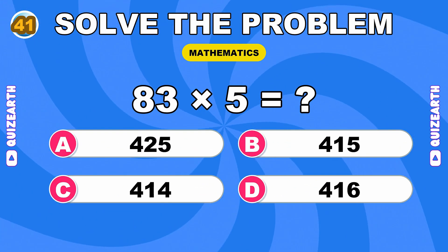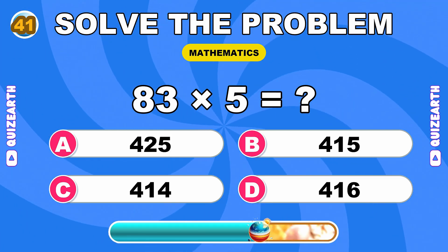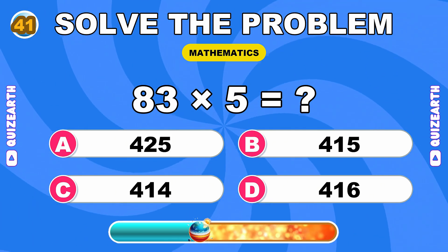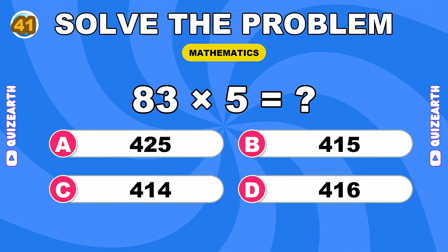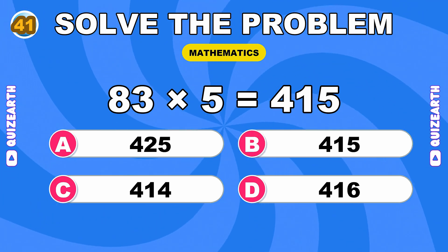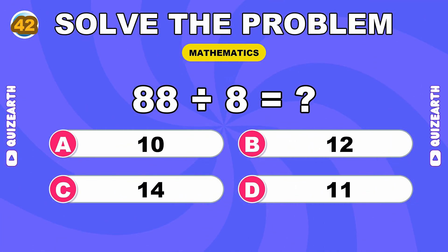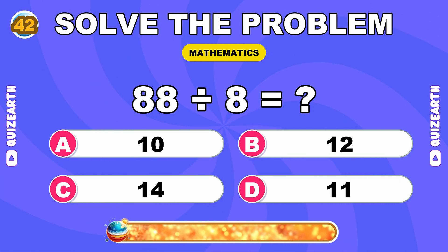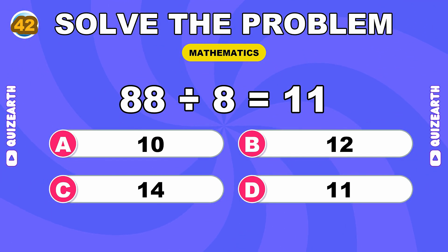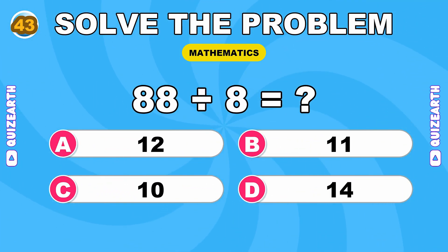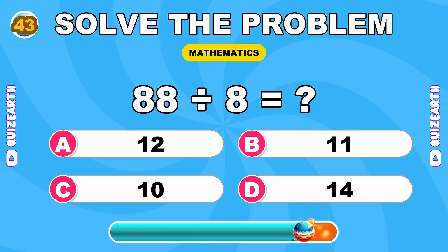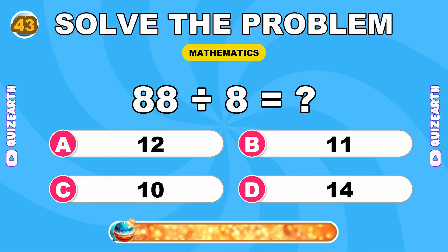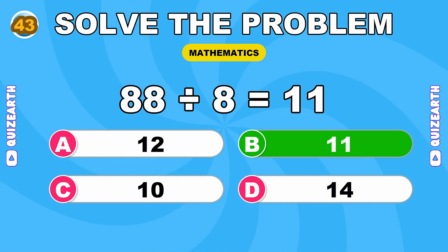How much is 83 times 5? Incredible, 415. What do you get when you divide 88 by 8? Still going strong, 11. Relentless, 11.